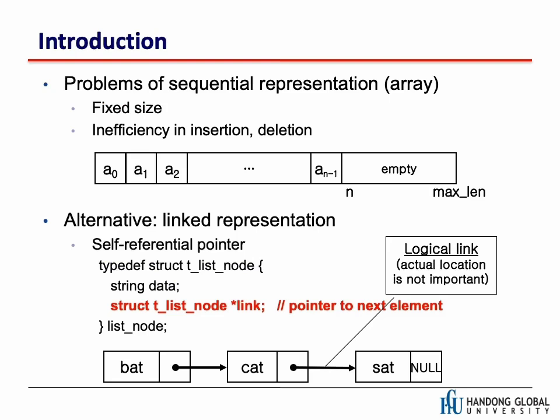In the previous slide I used an array as an example of a list, but there are a couple of problems with arrays. The first problem is that it has a fixed size. If we have a static array variable, the size is fixed at compile time. Even with a dynamically allocated array, once we allocate memory space, the size of that memory space is fixed.